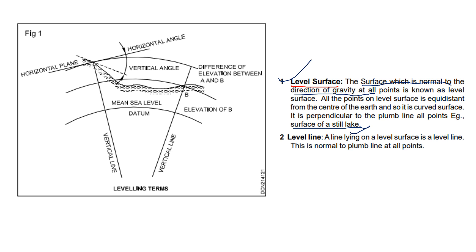Next, the level line. A level line lies on the level surface and is normal to the plumb line at all points. The level surface is normal to the plumb line, and that line on the level surface is called the level line.